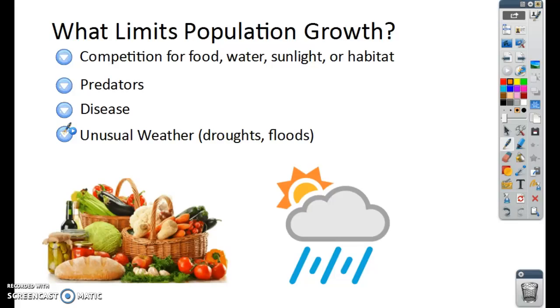And then lastly, unusual weather. If there's a drought, maybe there's less food. So then the animals do not have as much food, and so they can't adequately grow their population. Floods, hurricanes, tornadoes, anything like that. It even could be warmer temperatures. Some organisms, like coral, are really sensitive to temperature. So if the temperature of the ocean rises too much, they will actually end up dying.